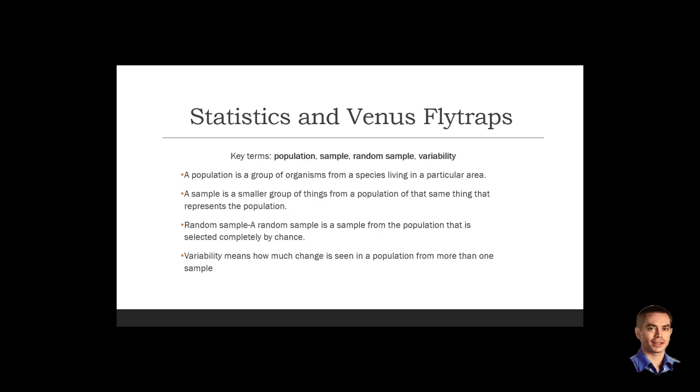So the key terms here are population, sample, random sample, and variability.